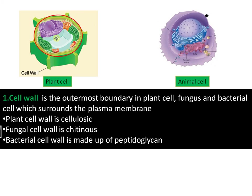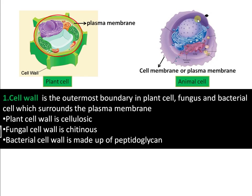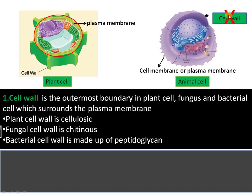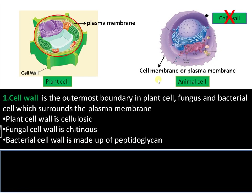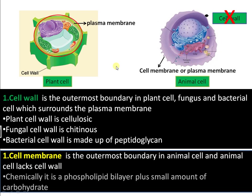Plasma membrane is a structure seen inner to the cell wall in the case of plant cells, whereas in the case of animal cells, plasma membrane forms the outermost boundary. Cell membrane, or plasma membrane, is chemically a phospholipid bilayer plus a small amount of carbohydrates and proteins.